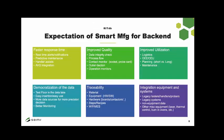Expectations for smart manufacturing back-end include faster response times — real-time alerts and notifications, predictive maintenance, handler assists, and AGV integration with robots. Improved quality through data integrity checks, process flow, contact monitoring, sockets, probe cards, and outlier decisions or operational monitors.